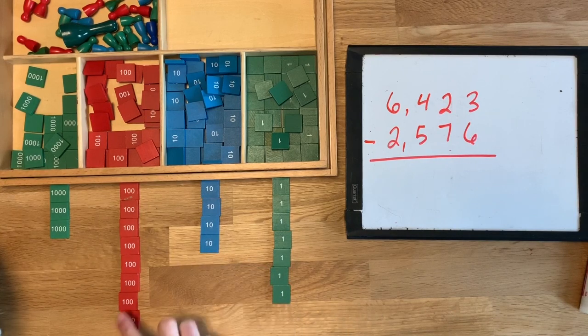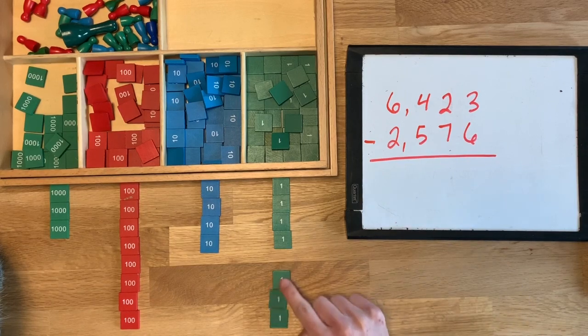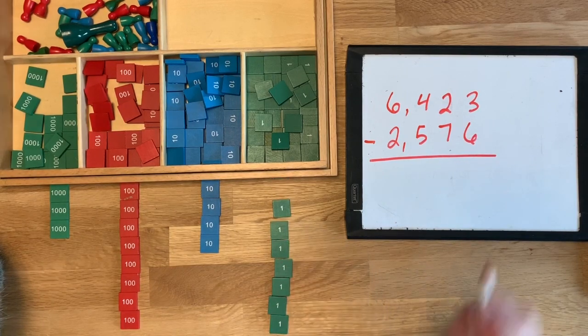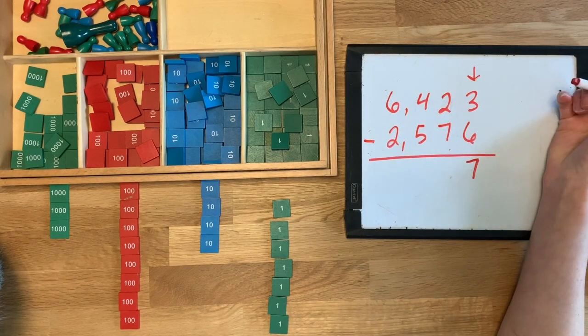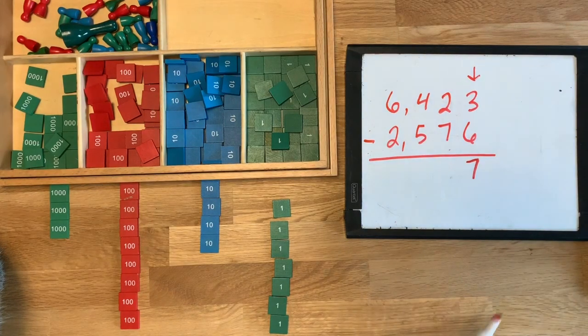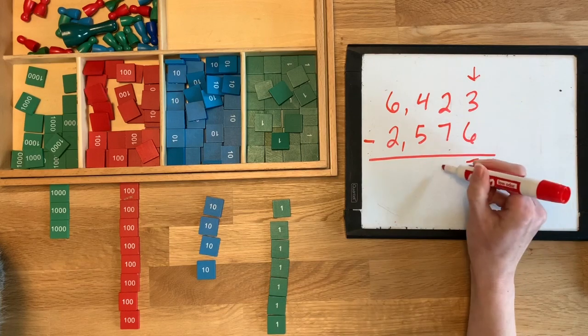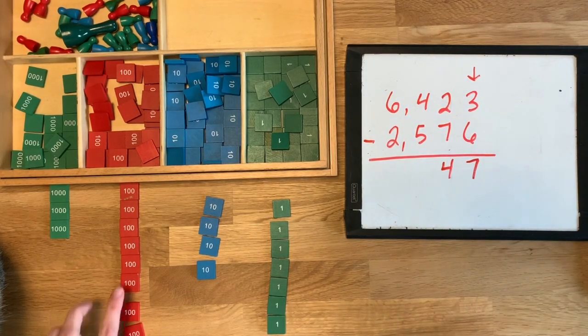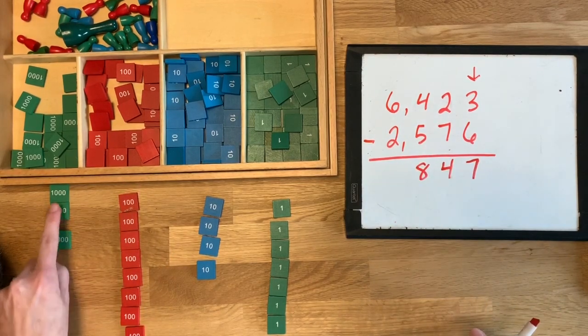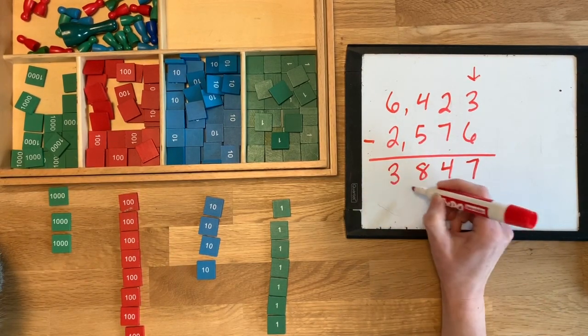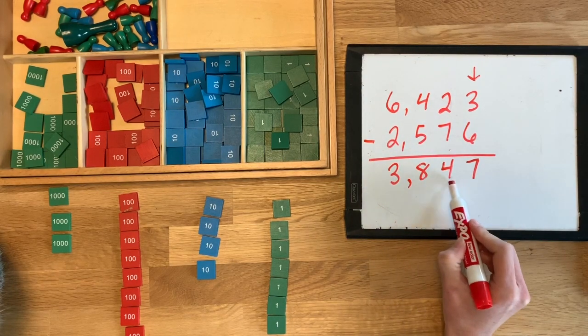So I'm going to push all these together and we're going to write our answer. So how many units? One, two, three, four, five, six, seven. And remember your units is always on the right side. Always, always, always over here. Then how many tens? One, two, three, four. How many hundreds? One, two, three, four, five, six, seven, eight. And how many thousands? One, two, three. Our answer is 3,847.